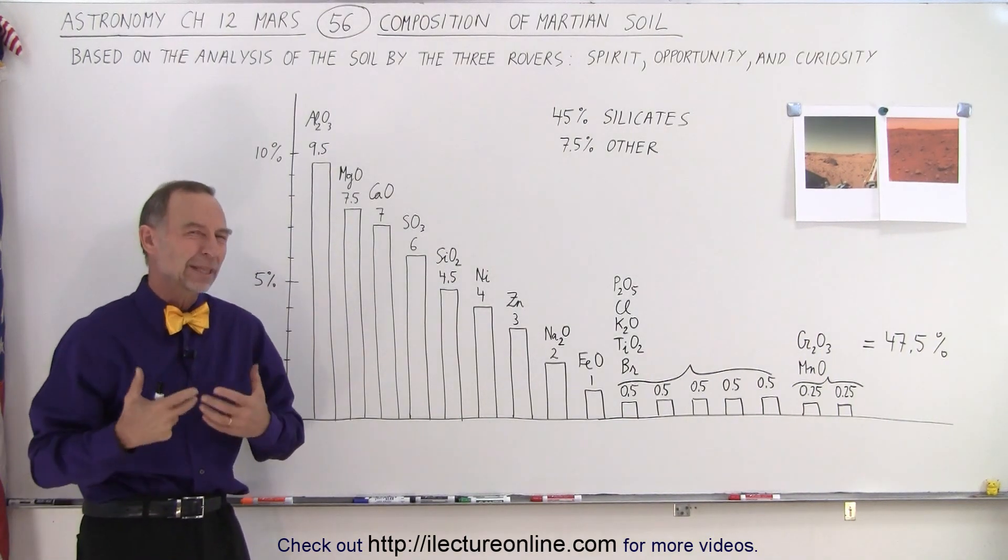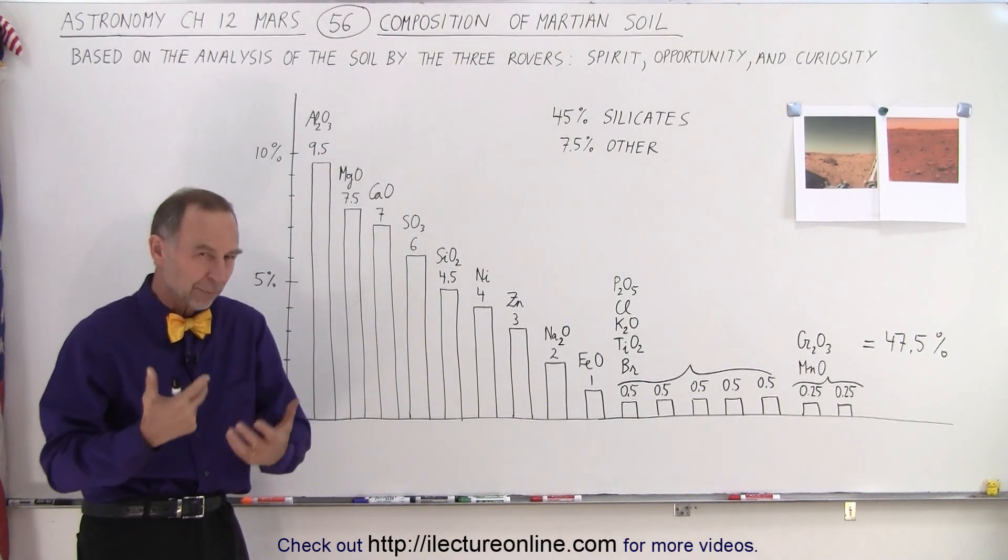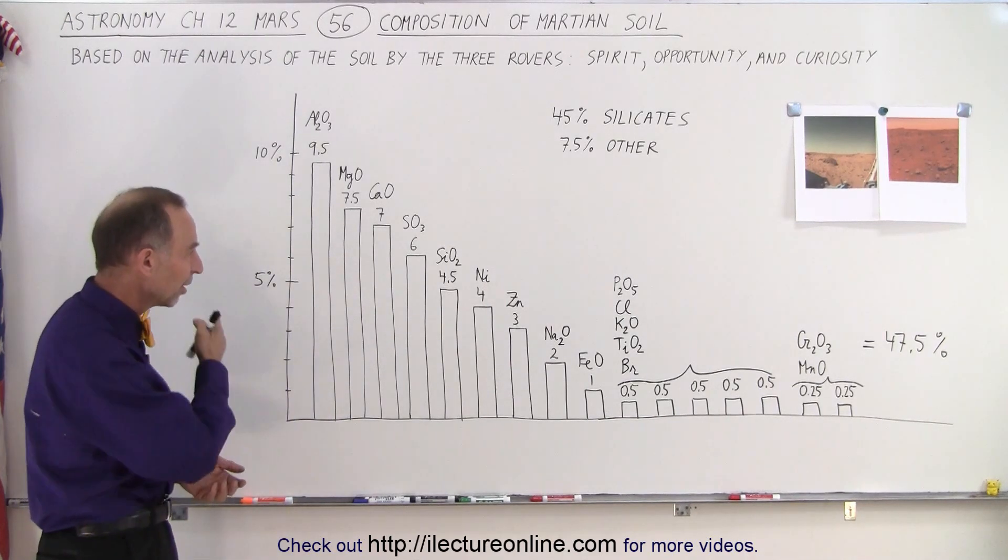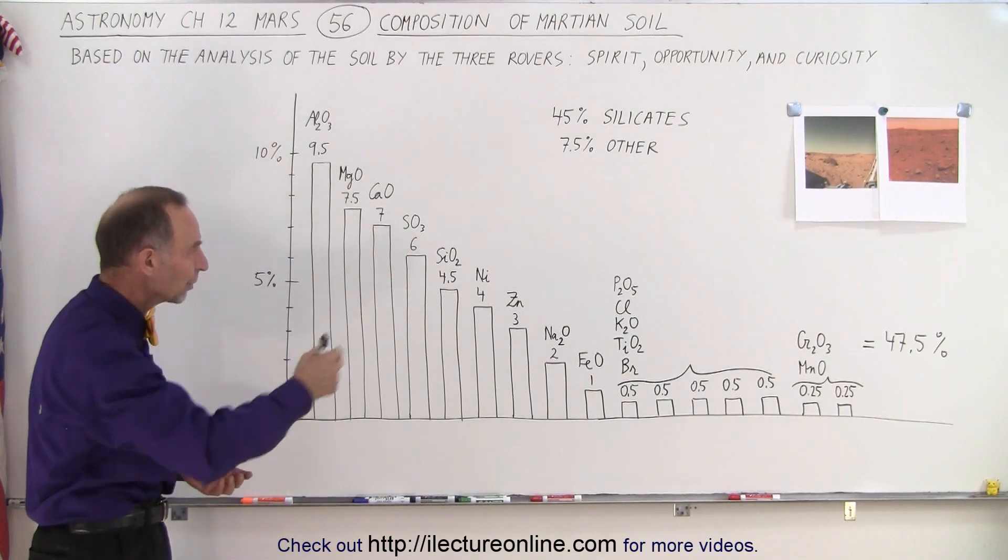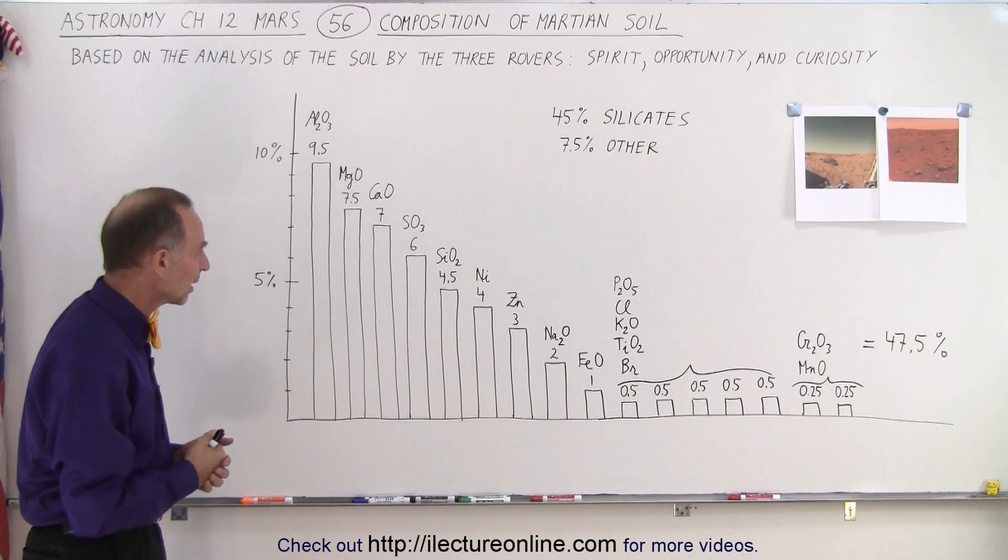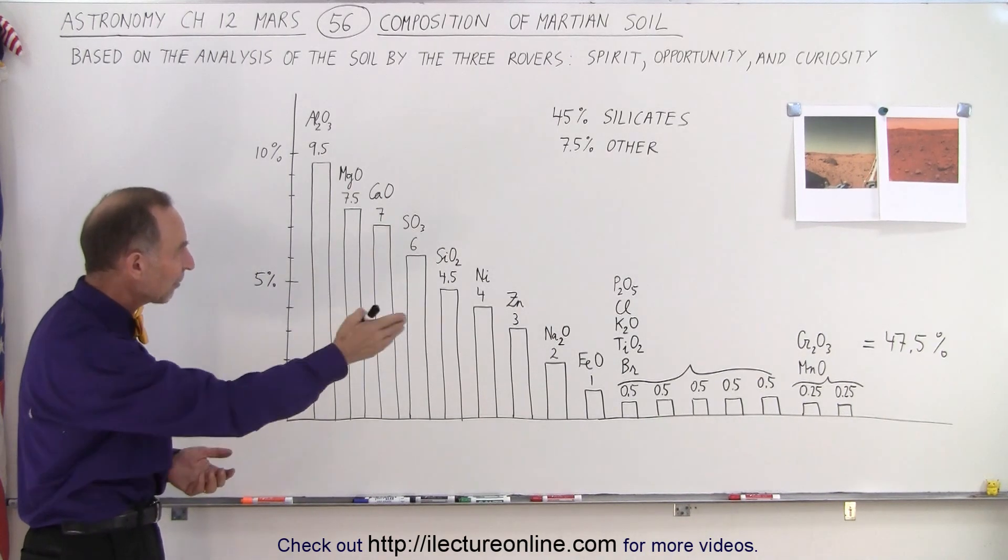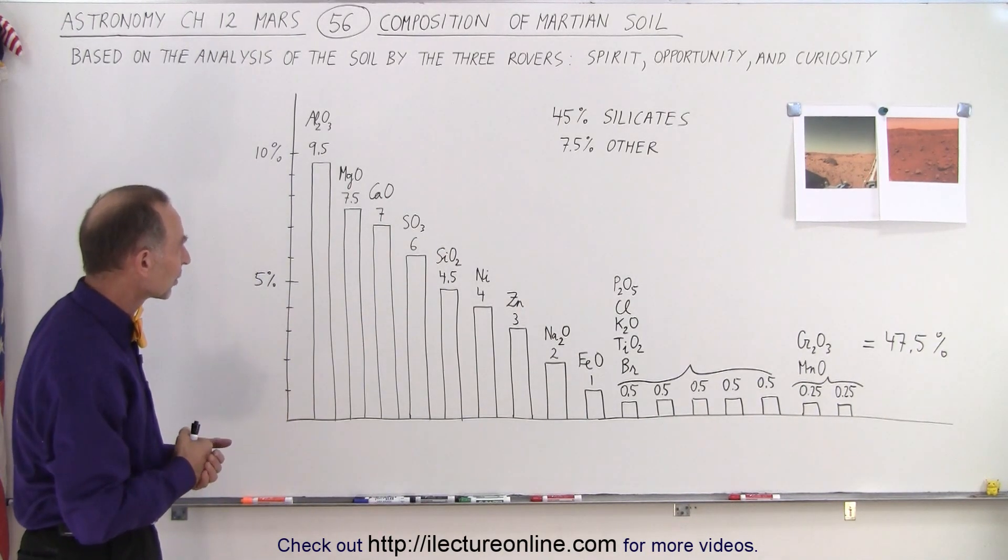Of course, that's not exactly what we think the crust is made of. We expect a different kind of consistency of the crust. But the loose soil on top of the crust here that was found at these three landing sites contain, on average, these kind of chemicals and minerals in the soil.